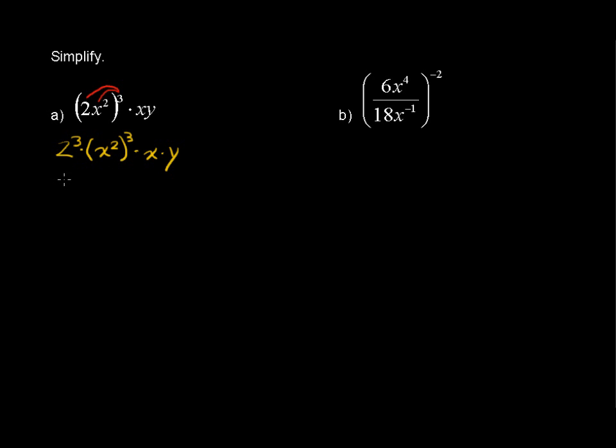So 2 to the third, that is 8. And x squared raised to the third power, when you have a base and its exponent raised to another exponent, you multiply these exponents. So 2 times 3 is 6. So now we have x to the sixth, without the parentheses, times still x times y.